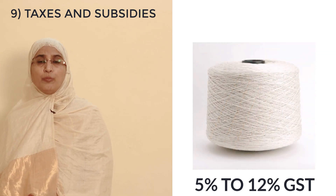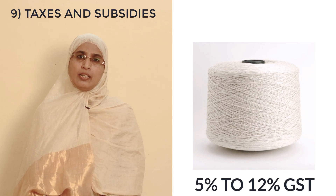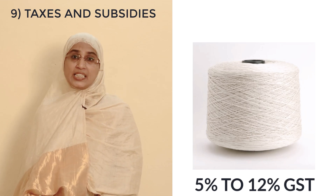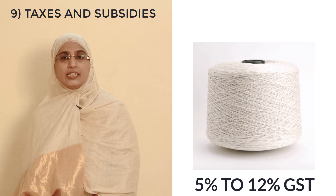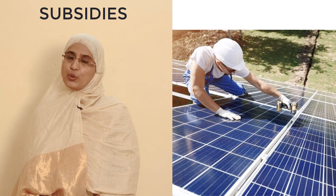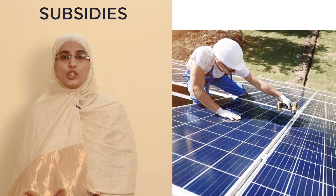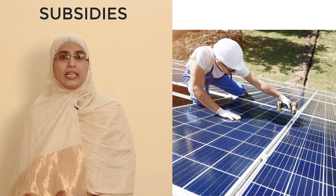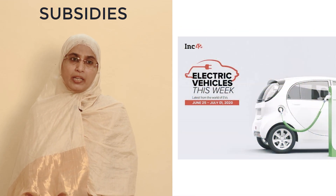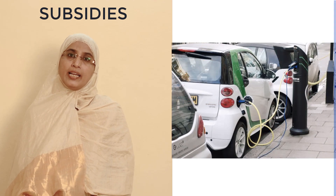Due to imposition of taxes, demand for a commodity comes down. As against this, when there is a subsidy, demand increases. For example, for the installation of solar panels, government ne subsidy diya hai, toh solar panels ka demand badh gaya hai. Similarly, kisi bhi electrical vehicle pe government ne subsidy diya hai, toh electric vehicles ka demand badh gaya hai.